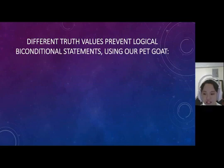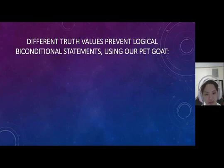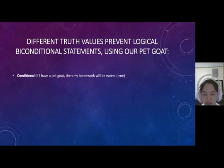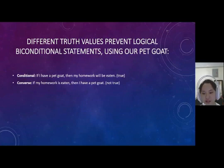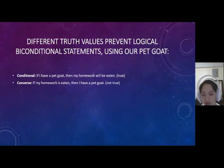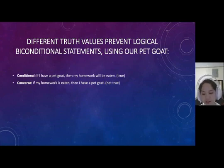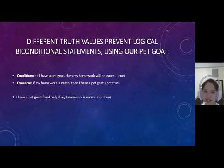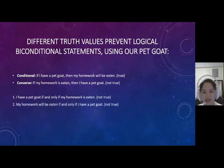Now let's see how different truth values prevent logical biconditional statements. Using the pet goat example: the conditional is — if I have a pet goat, then my homework will be eaten, which is true. The converse is — if my homework is eaten, then I have a pet goat, which is not true. We can attempt but fail to write logical biconditional statements — like 'I have a goat if and only if my homework is eaten' and 'my homework will be eaten if and only if I have my pet goat' — but both are not true.